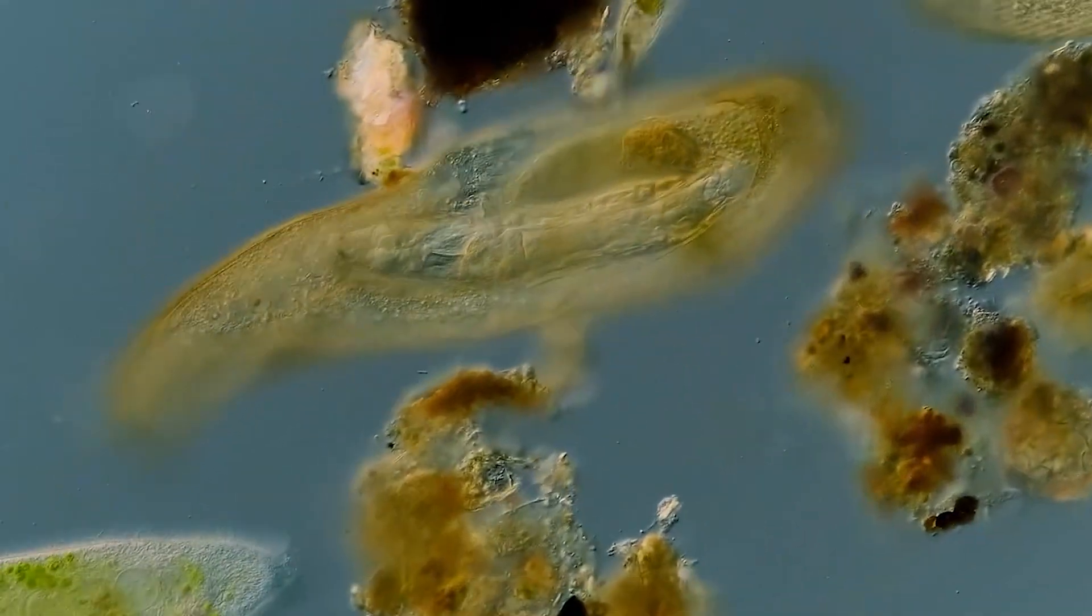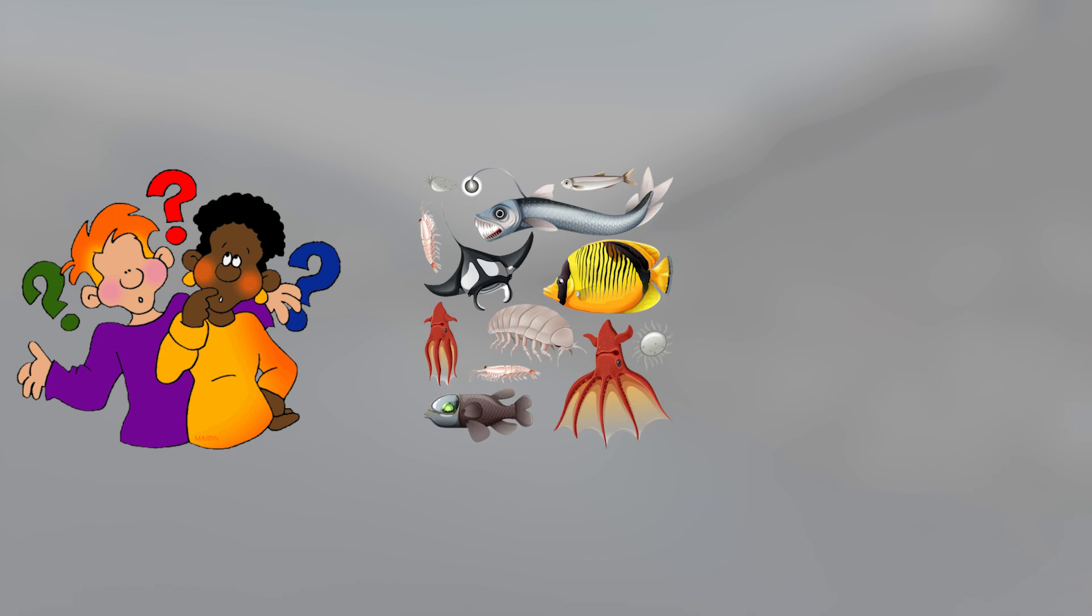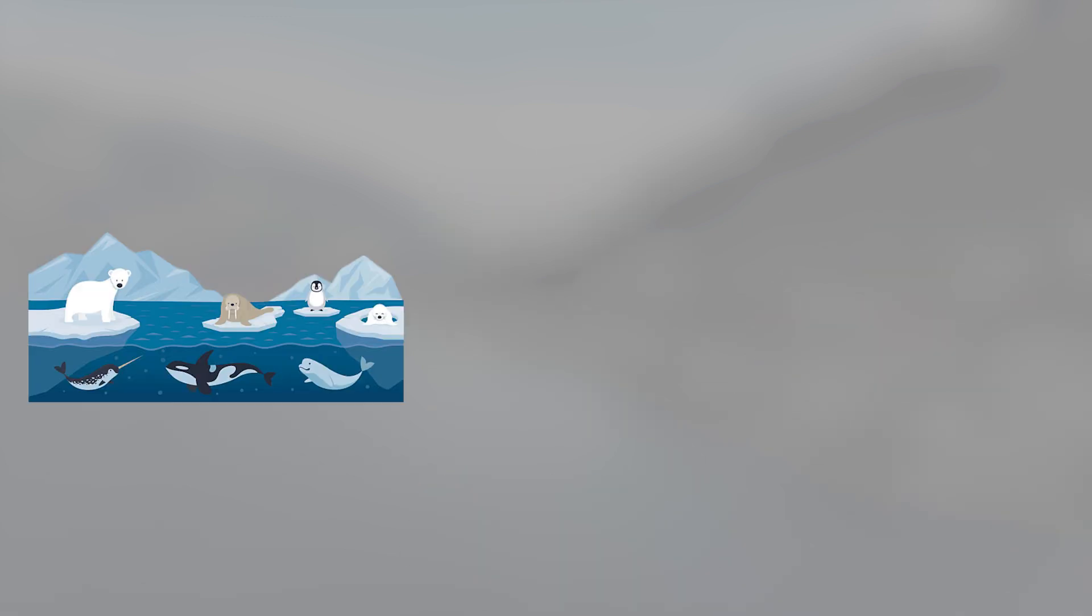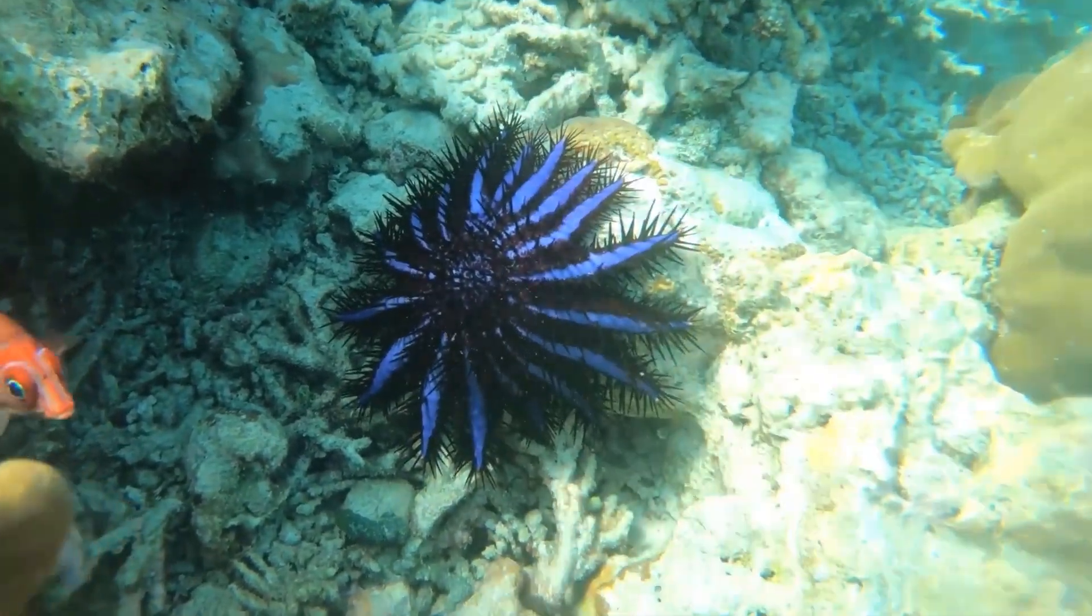If one tiny invertebrate can pull this off, what else might be capable of it? Could other ancient animals be buried in the permafrost? Are there frozen lifeforms we haven't identified yet, some we may not even recognize as life?